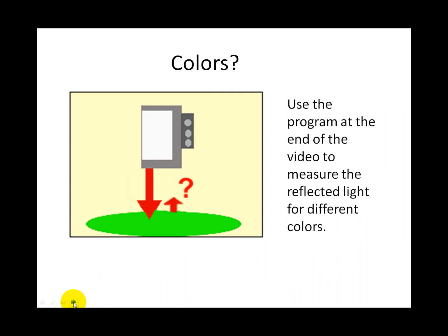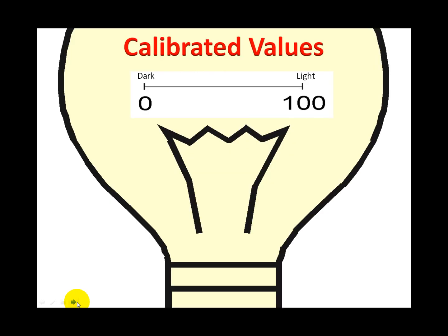You may be wondering about colors. Yes, the light sensor can distinguish between some colors. I recommend that you use the program at the end of this video to measure the readings of different colors. If you get different values, you may be able to use those values to detect a change in color. If you have a need for a color sensor, there is one out there and it is allowed in FLL.